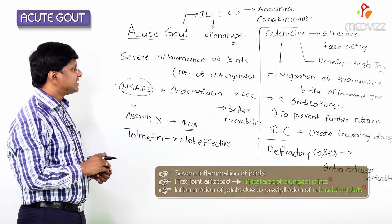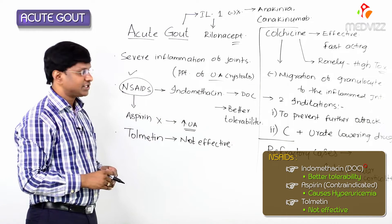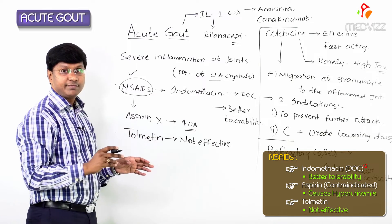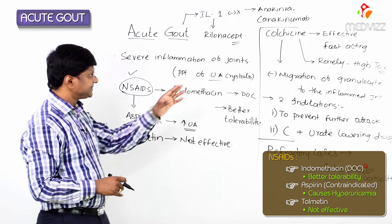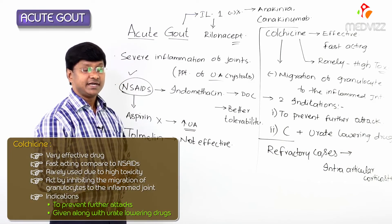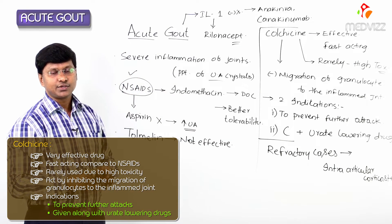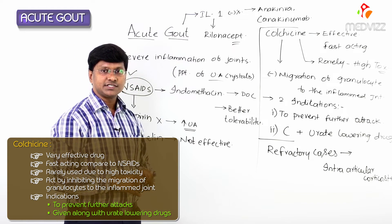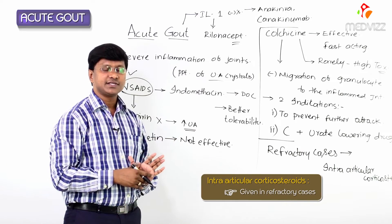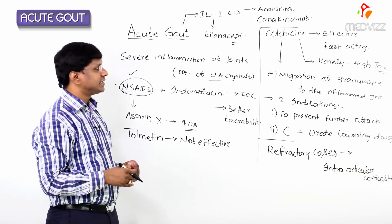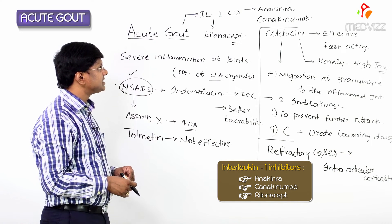In summary, acute gout is severe inflammation of the joints due to precipitation of uric acid crystals. NSAIDs like indomethacin are the drug of choice due to better tolerability; aspirin is contraindicated as it causes hyperuricemia; and tolmetin is not effective. Colchicine is effective and fast-acting but rarely used due to high toxicity, with two daily-use indications: preventing further attacks and use with urate-lowering therapy. Refractory cases are managed with intraarticular corticosteroids, and interleukin-1 inhibitors — anakinra, canakinumab, and rilonacept — represent newer treatment options.